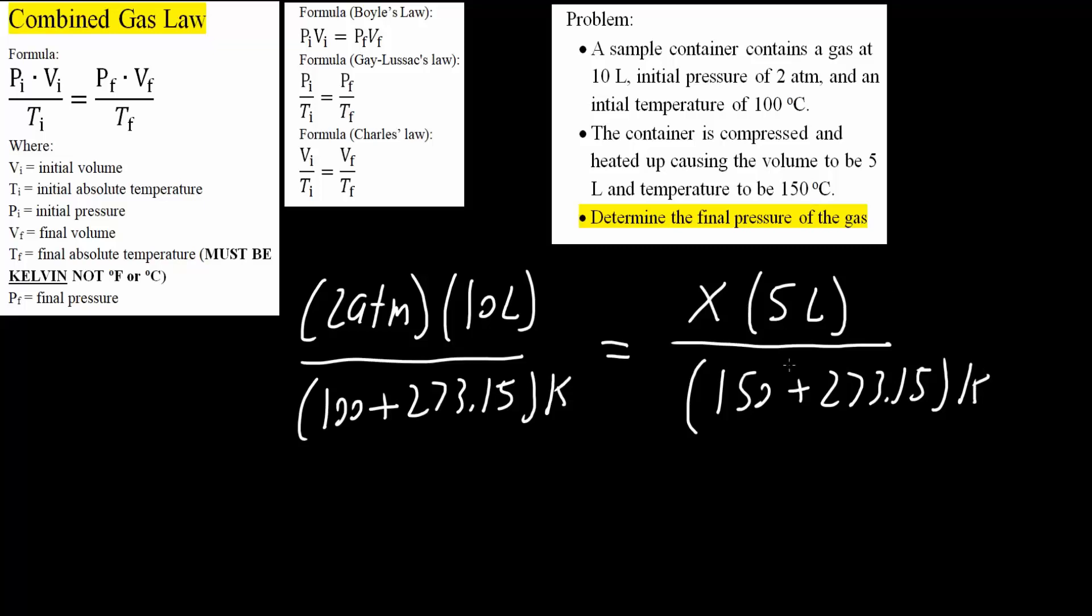Now we need to rearrange this equation to get X. X is equal to, so this part remains the same. 2 times 10 divided by 373.15.